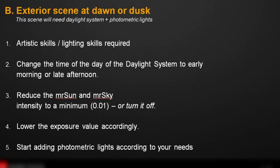You have to change the time of day of the daylight system to early morning or late afternoon. You'll have to reduce the Mental Ray sun and sky intensity to a minimum of 0.01, or turn it off. That's a step you'll have to do manually — it won't happen automatically. Then you'll lower the exposure value accordingly to match the time of day, and start adding the photometric lights according to your needs or lighting plan.